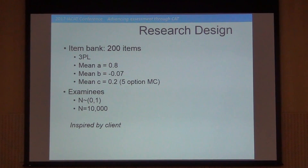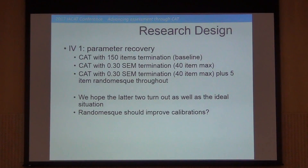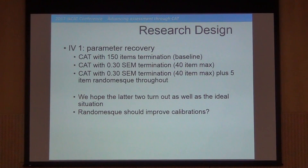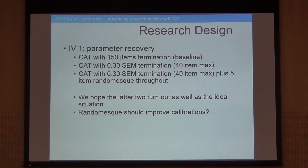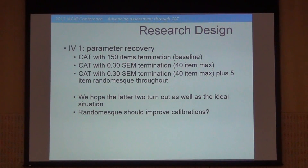I generated 10,000 examinees on a standard normal distribution. There were three variables I focused on. The first involved whether we can recover the original item parameters. As a baseline, I used a 150-item fixed-length test — since the bank has 200 items, a 150-item fixed test would produce pretty dense, not very sparse data. So it's a best-case scenario for parameter recovery.